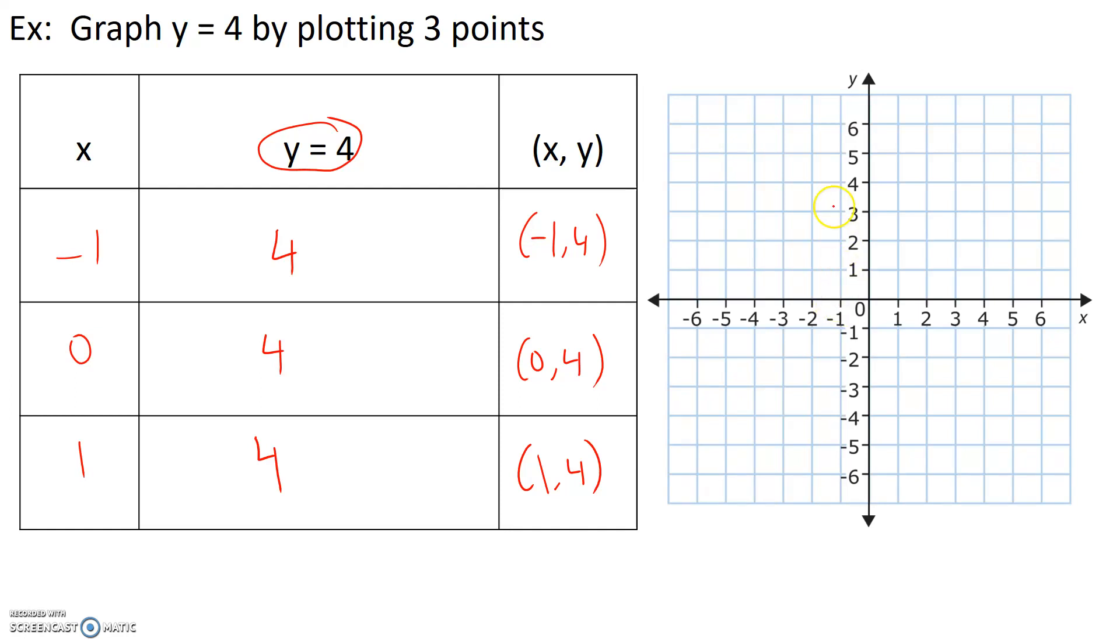So if we plot these points, we have negative 1, 4. We have 0, 4, and we have 1, 4. What we get is a horizontal line.